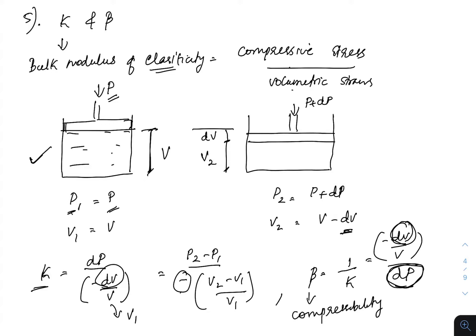We increase the pressure by an incremental DP, so the net pressure becomes P + DP. Under this increased pressure, the volume reduces by DV, and the final volume V₂ = V − DV. Bulk modulus K equals DP divided by (−DV/V), with the negative sign because increasing pressure reduces volume. So K = (P₂ − P₁) / [−(V₂ − V₁)/V₁].